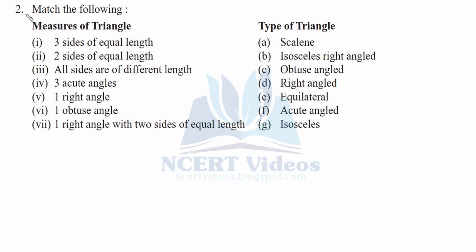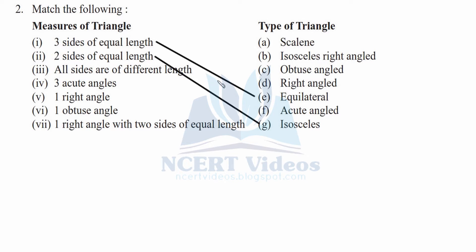Question two: Match the following measures of triangles with their type. Three sides of equal length — all lengths are equal, therefore it is an equilateral triangle. Two sides of equal length — it is isosceles, so we match it accordingly. All sides of different length — it is scalene.